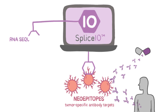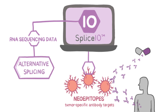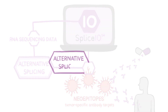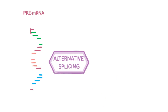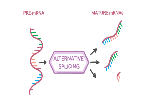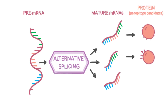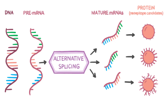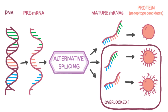Splice.io uses RNA sequencing data to identify unique neoepitopes that arise from alternative splicing. Alternative splicing is a process by which the same premature mRNA transcript can give rise to many different mature mRNA isoforms, which are then each translated into unique proteins. Because of this, technologies focusing only on DNA screening techniques would overlook many potential neoepitope candidates.